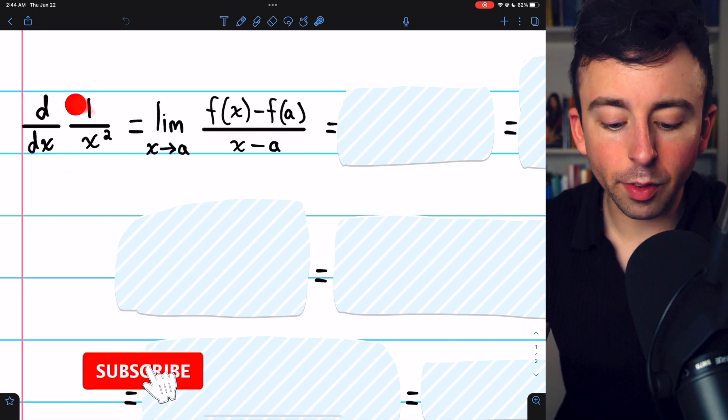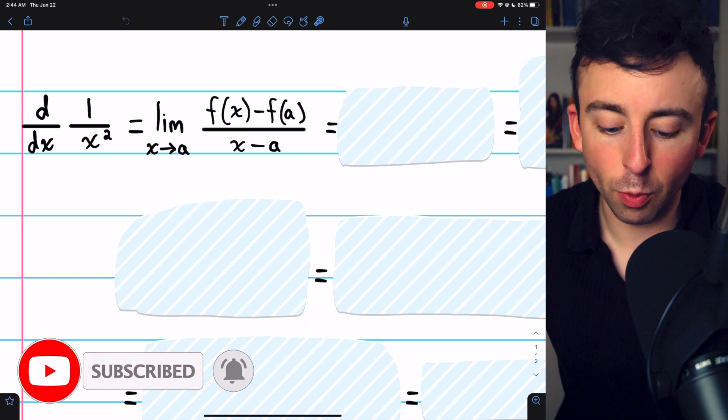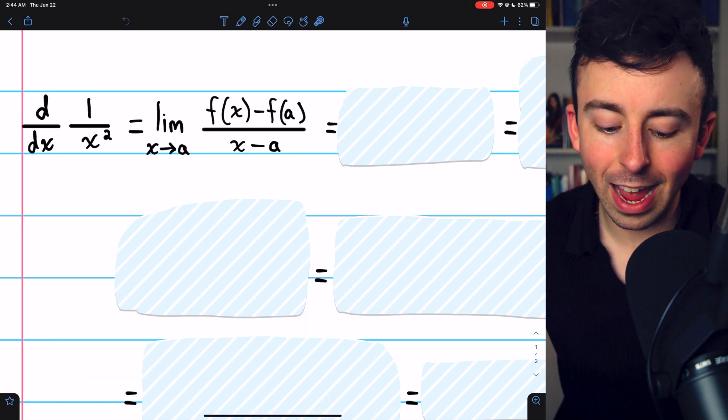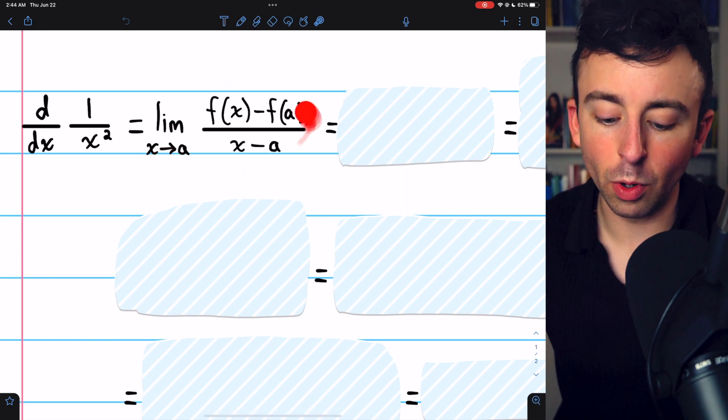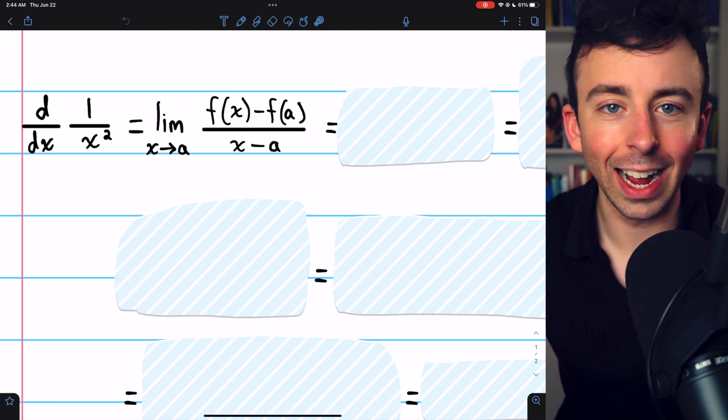We're going to evaluate the derivative of 1 over x squared using the limit definition of the derivative, the limit of f of x minus f of a divided by x minus a as x approaches a. This is the derivative. f of x in our case is 1 over x squared.